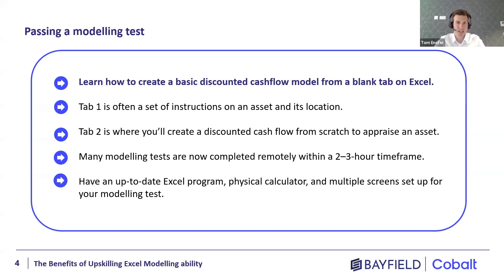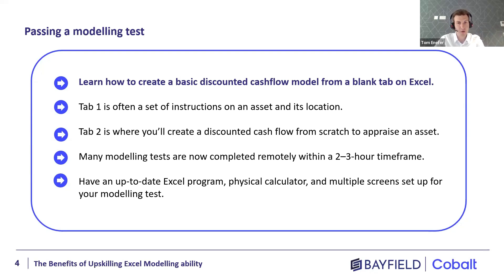Tab two is a tenancy schedule which, as the name implies, goes through the occupancy of the building and the different break clauses involved. Tab three is a completely blank tab — you have to build the model completely with your own formulas, sometimes within a time limit as early as two hours, but typically more like two and a half to three hours, to build a discounted cash flow in monthly, quarterly, or yearly format.